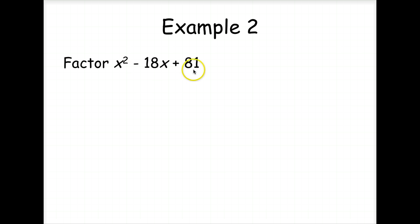Here we have perfect squares. Now these are different signs, so we know that our answer is going to be x minus 9 squared. So x and 9 are both squared in this one.